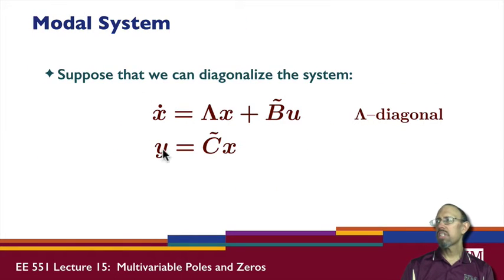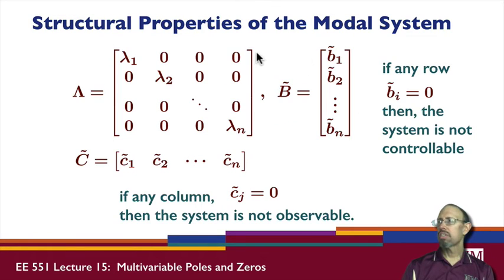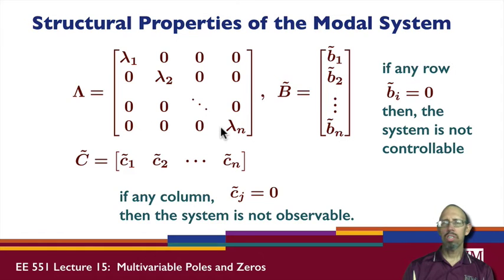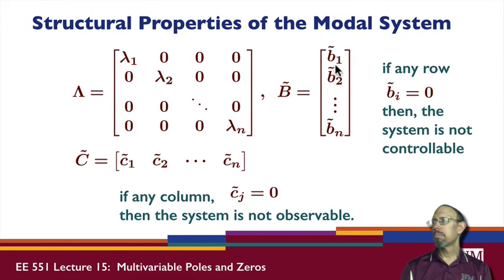What happens if we have a system that is in diagonal form? Suppose we have diagonalized a system where lambda is diagonal and we have done a similarity transformation. We now have what are called structural properties of the modal system. We have rows b1 through bn and columns c1 through cn, each row associated with an eigenvalue, and the matrix is diagonal. This does not apply to defective matrices requiring Jordan form. If any row in this matrix is zero, the system is not controllable. Similarly, if any column is zero, the system is not observable.